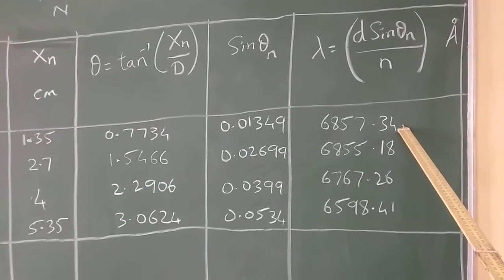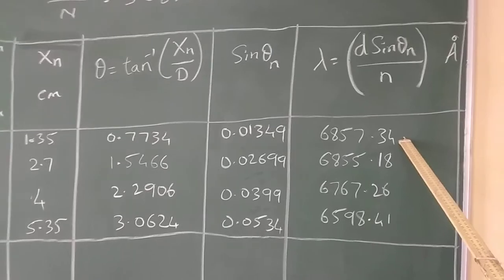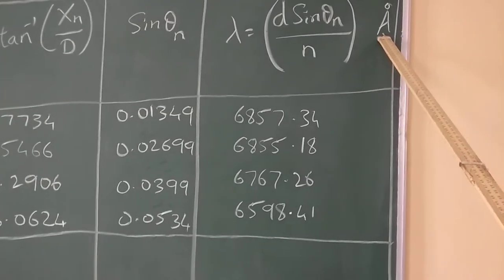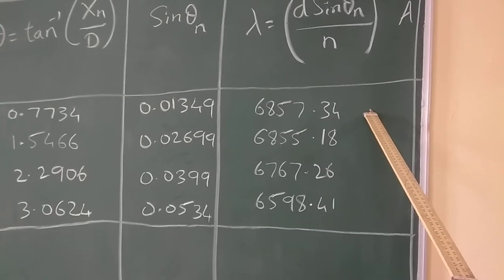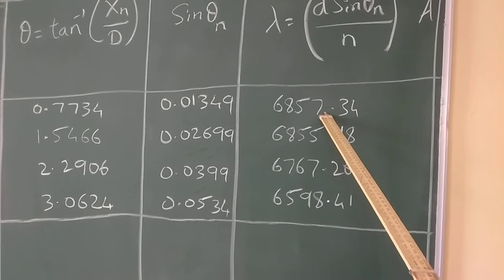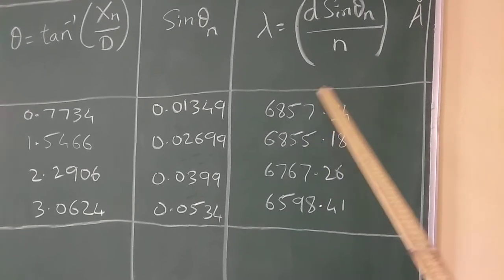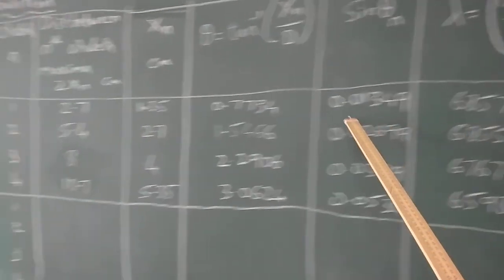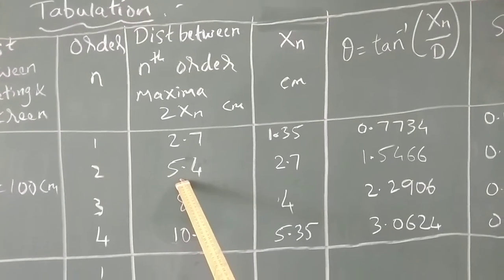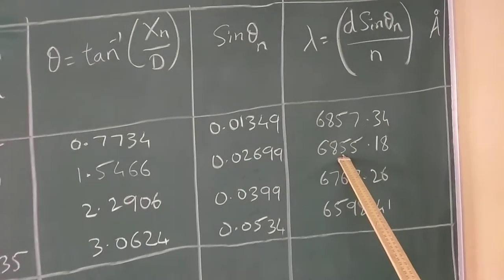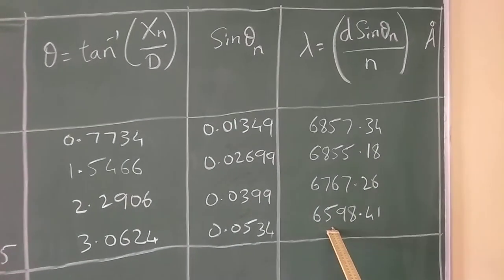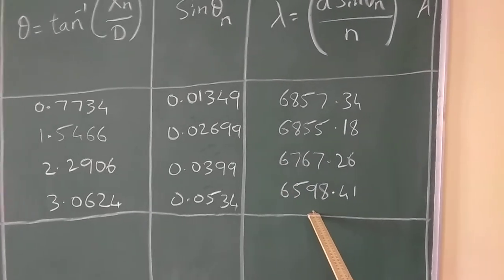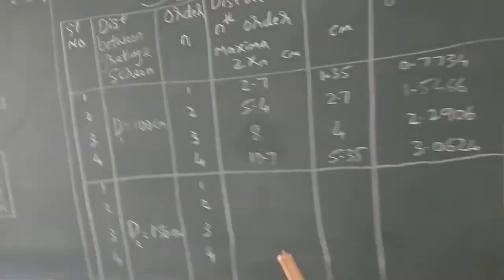Substituting that value into the equation and calculating, it comes to be 6857.34 cm. So the answer comes in centimeters, which we have to convert into angstroms. We know that 1 angstrom equals 10⁻⁸ cm. Taking this factor into consideration, the answer converts to 6857.34 angstroms. Similarly, for the second order we calculate with n=2, and for third and fourth order with n=3 and n=4 respectively. One example has been calculated, and this is the value obtained for the distance of 100 centimeters.